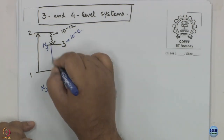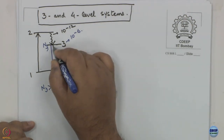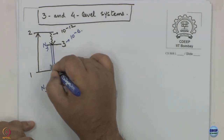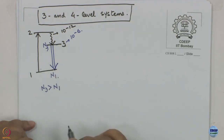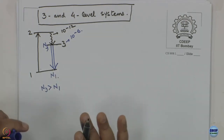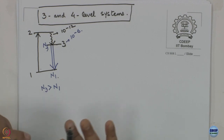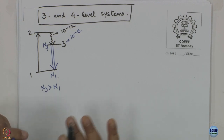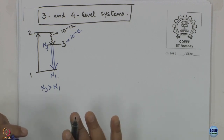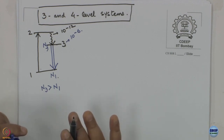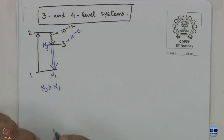And then you can get stimulated emission between 3 and 1. To summarize what we have discussed: N2 is populated from N1, we can say instantaneously (transition time is attoseconds). From 2 to 3, that population transfer takes place very efficiently.